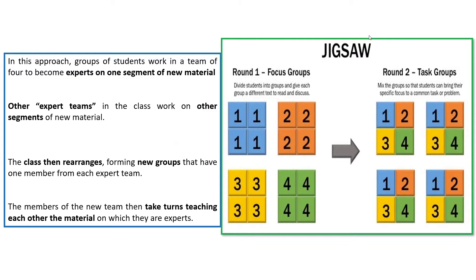This way, students get to teach their expertise to their peers. The teacher, of course, has to facilitate and ensure that what students learn in the first stage is appropriate, suitable, and correct. The teacher must also ensure that when students become teachers for others in round two, they are able to disseminate their learning adequately. So while in jigsaw the students are very active, the teacher has to play an even more active role to ensure that things are going smoothly.